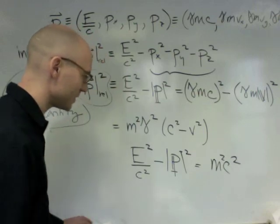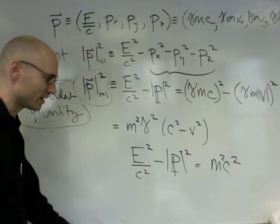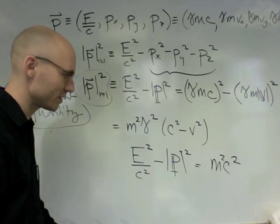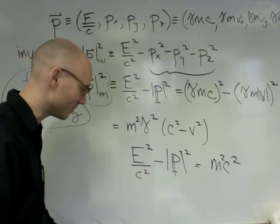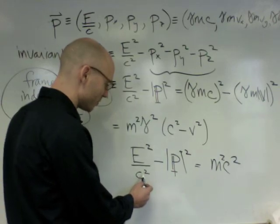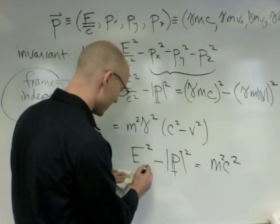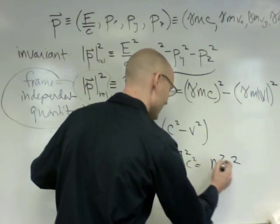And now I'm going to manipulate this a little bit more, and I'm going to turn it into the most important equation in all of physics. Here we go. So I'm going to multiply through by c squared. This becomes a P squared c squared.